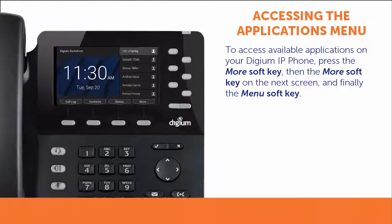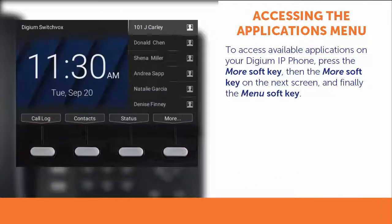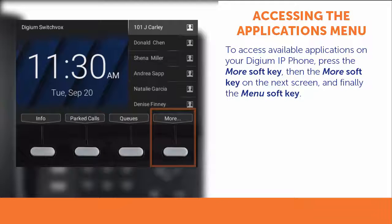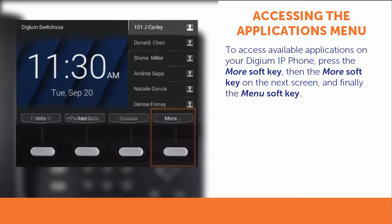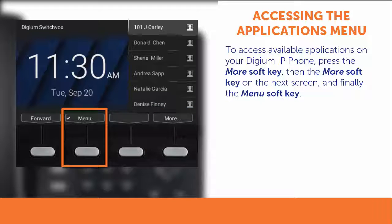From the idle screen, press the More soft key, and then the More soft key once again for the next screen. Then press the Menu soft key.